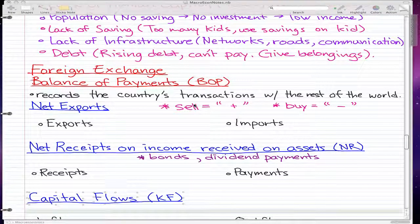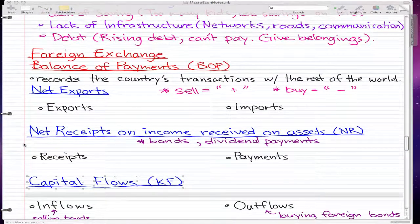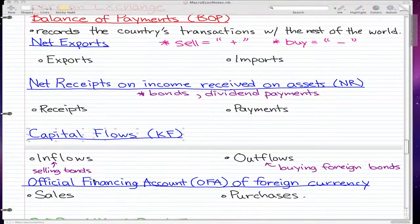We're finally at foreign exchange, and the first thing we're going to talk about is Balance of Payments, or BOP. BOP records a country's transactions with the rest of the world, and it is a sum of four elements: net exports, net receipts on income received on assets, capital flows, and the official financing account of foreign currency.